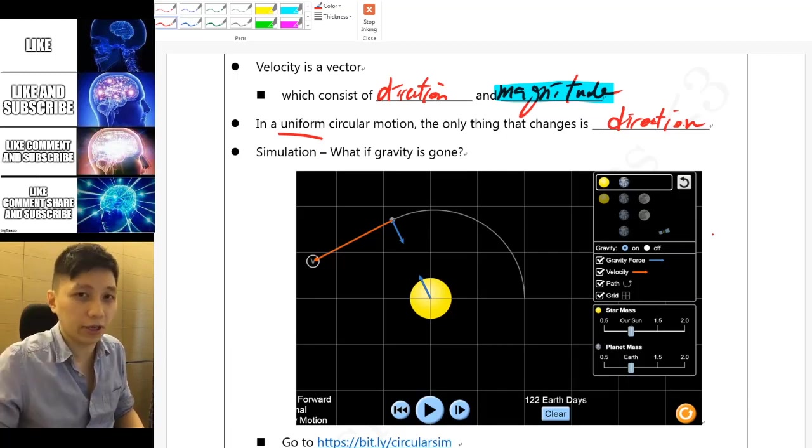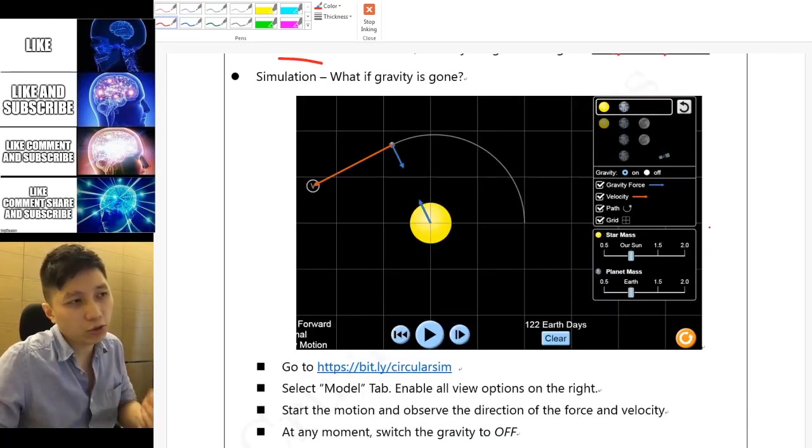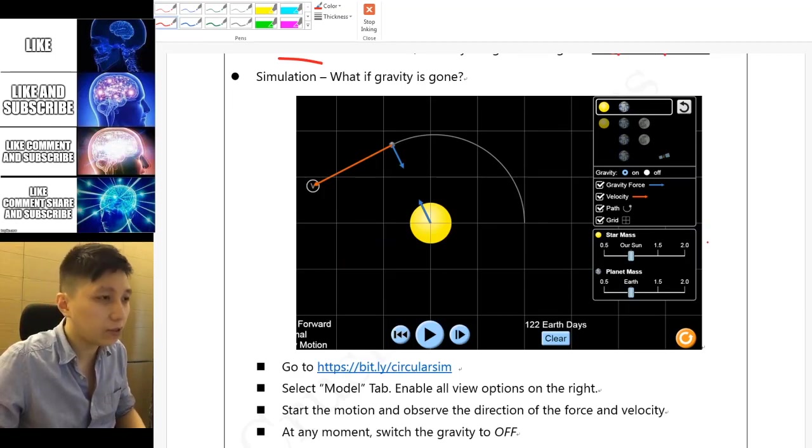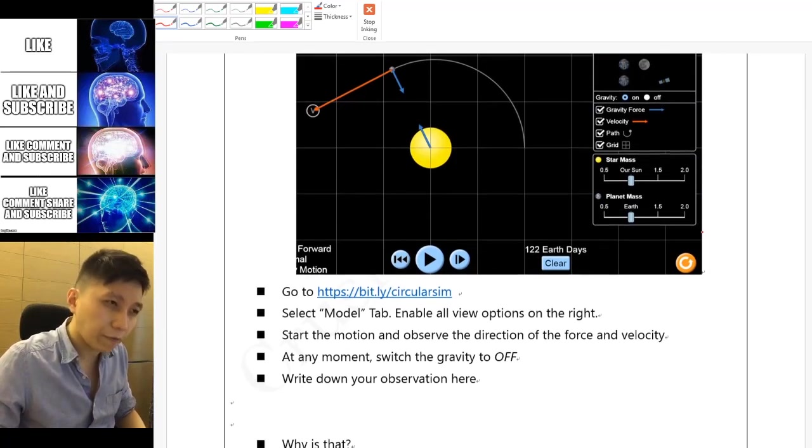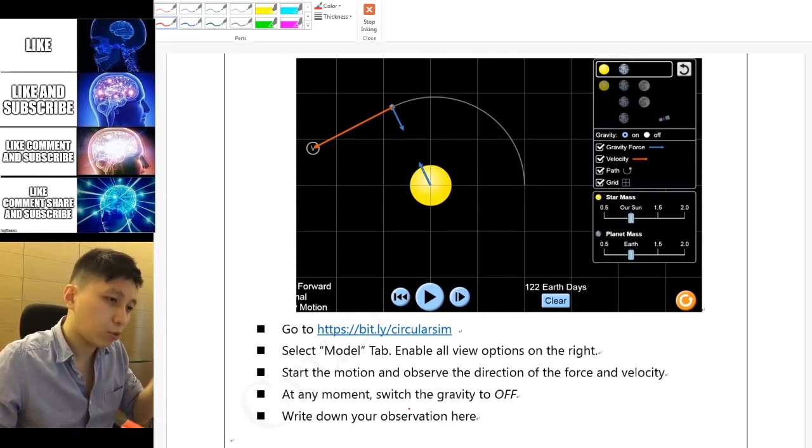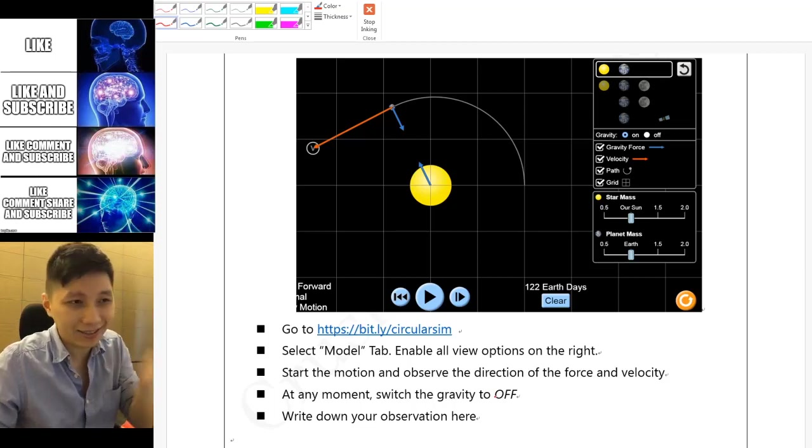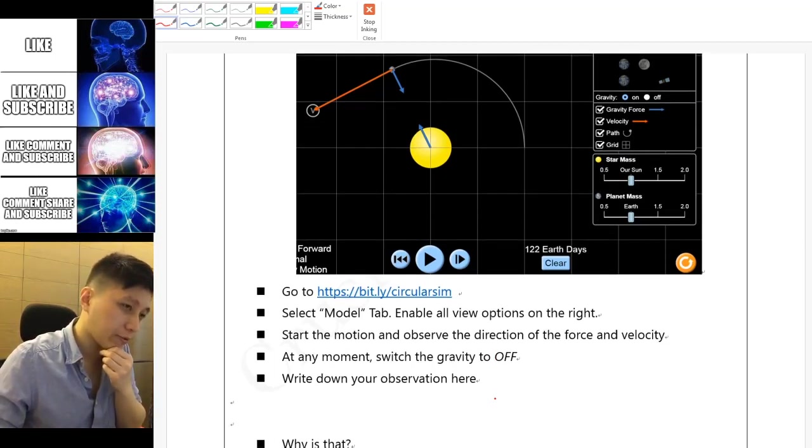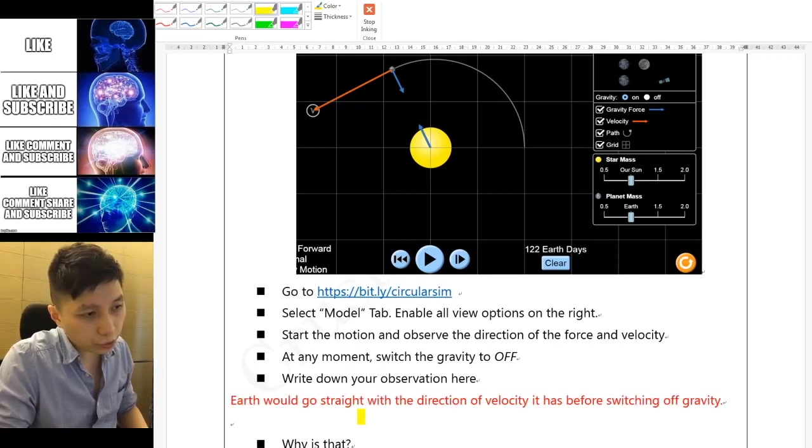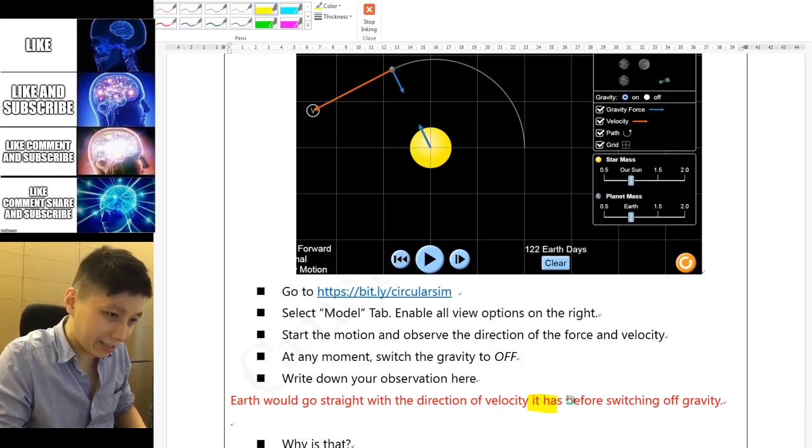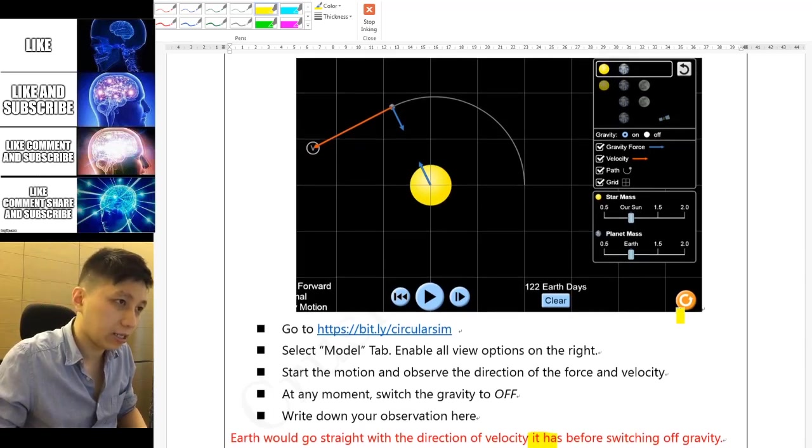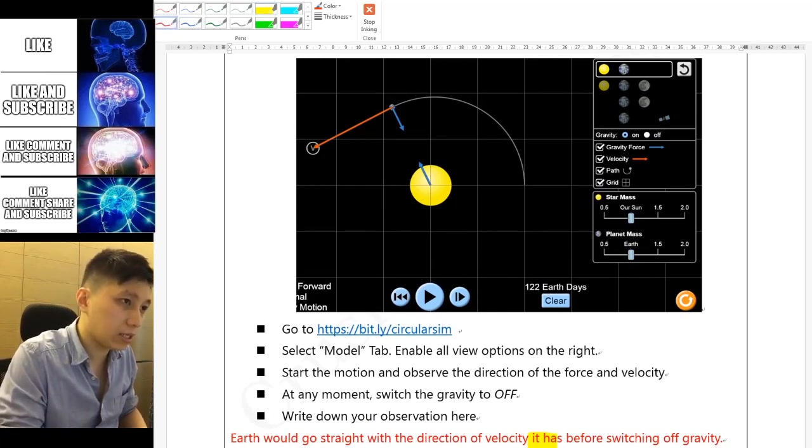And that's why from the simulation or from the animation earlier you see the direction, the arrow of the velocity will be changing all the time. And next will be the simulation which in fact I have already shown you in the previous video. If you haven't tried it you should pause the video now and try it first. And so what you find out eventually should be, once you switch off the gravity then the Earth will simply go straight according to the velocity that it has instant before you switch it off. So your observation could simply be the Earth will go straight with the direction of velocity that it has before switching off the gravity. So like in this diagram then what you will see is the Earth here will simply go straight like this, alright, forever.